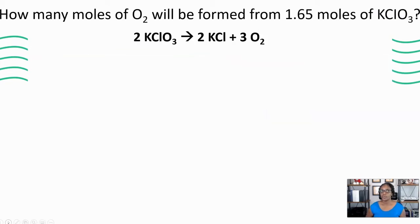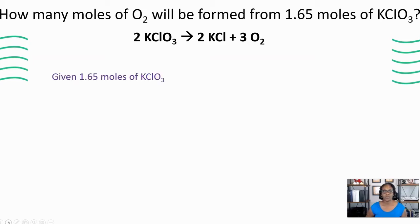Here's our first question. How many moles of oxygen will be formed for 1.65 moles of potassium chlorate? We have a balanced chemical equation. The first thing you want to do is always check your chemical equation to make sure that it's balanced — that's going to be very important. Then we're going to determine what is given and what we want to find. In this case, we're given 1.65 moles of potassium chlorate, and we want to find how many moles of oxygen is formed.